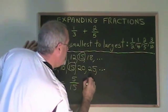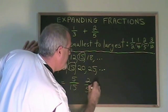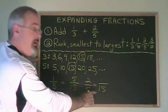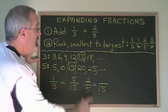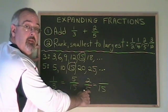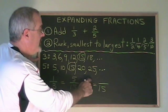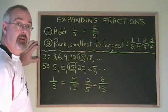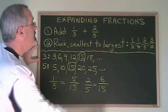Let's do 2/5. To get 5 to turn into 15, we have to multiply it by 3. What we do to the bottom, we have to do to the top. So we multiply the top by 3. 2 times 3 is 6. So 6/15 is the expanded version of 2/5.